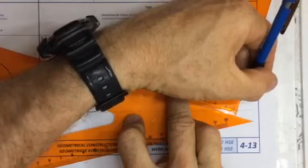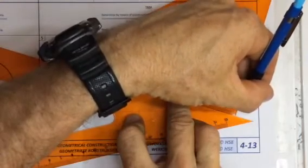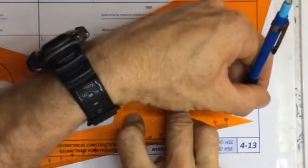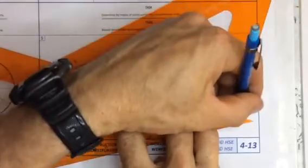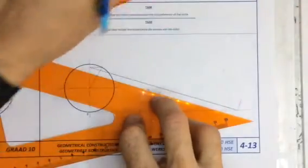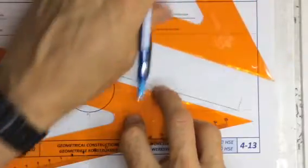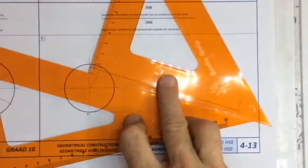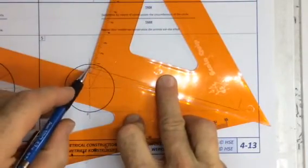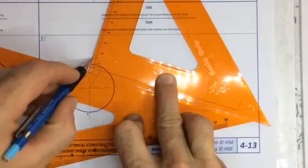You're going to take a 0.3 pencil and you're going to draw a line which is going to go almost down to the line leaving a millimeter gap there, turning it around, draw a line also leaving a millimeter gap between the end of the line.